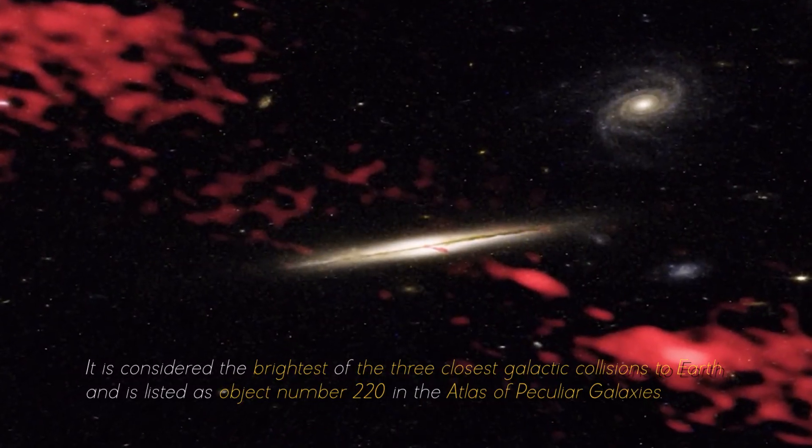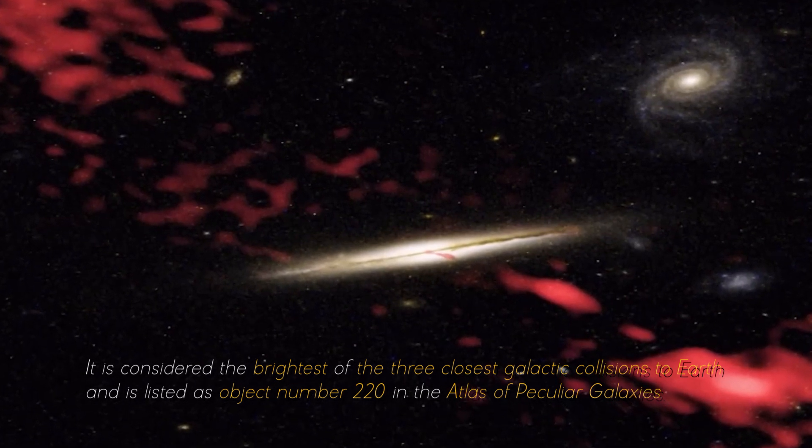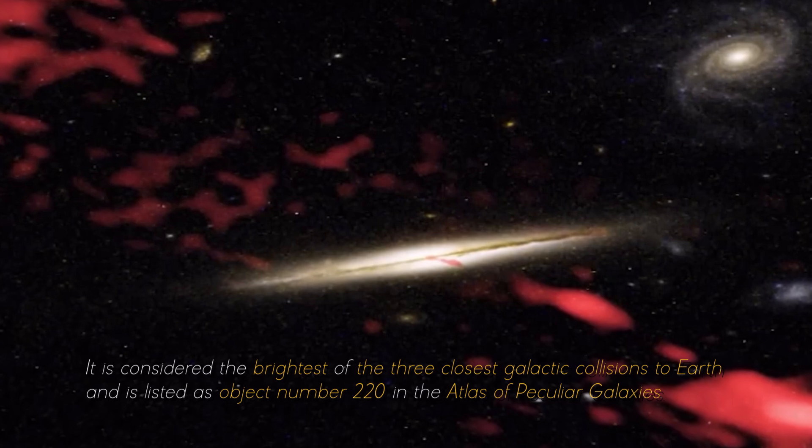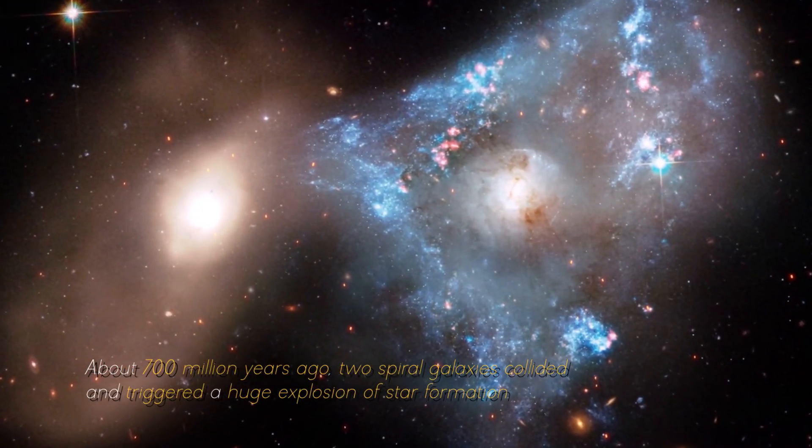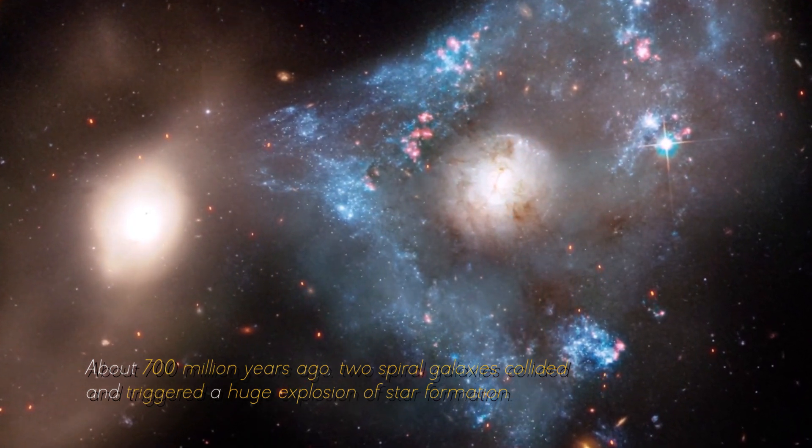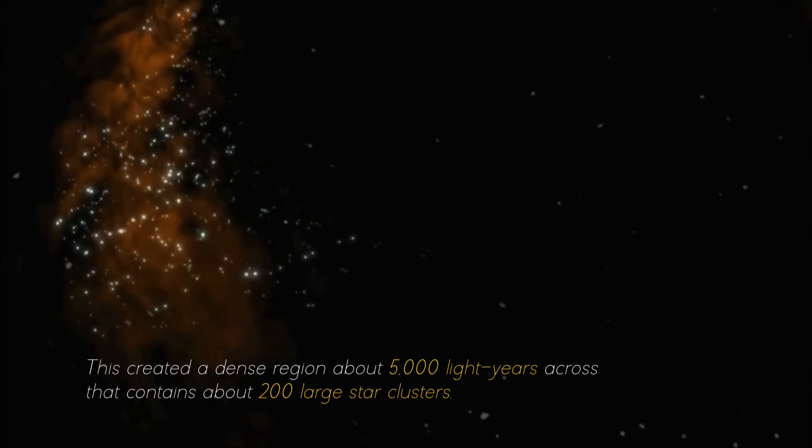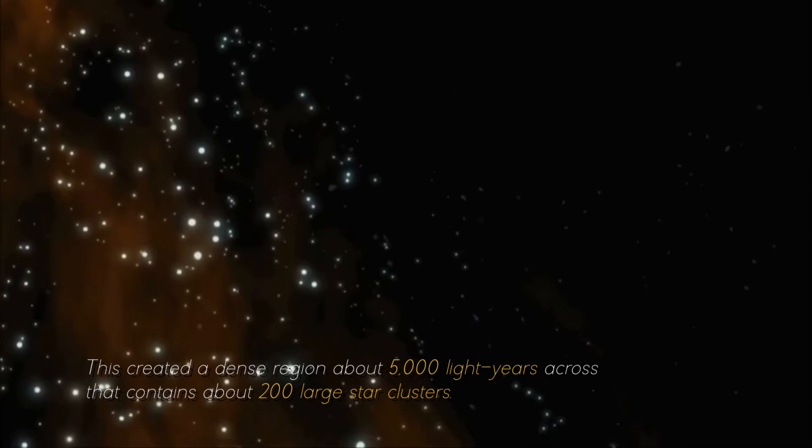It is considered the brightest of the three closest galactic collisions to Earth, and is listed as object number 220 in the Atlas of Peculiar Galaxies. About 700 million years ago, two spiral galaxies collided and triggered a huge explosion of star formation. This created a dense region about 5,000 light-years across that contains about 200 large star clusters.